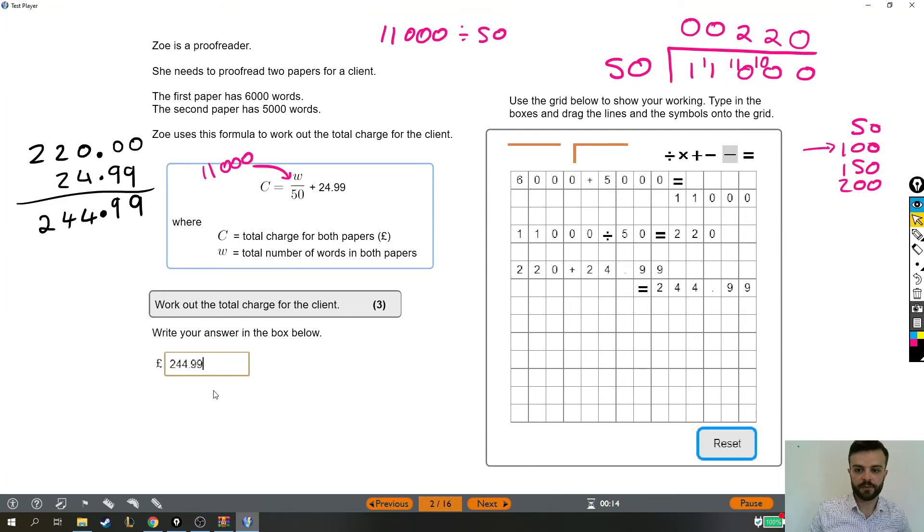So key things to take away from this. Bus stop division. Always fine. Even when you're divided by a two-digit number, you can still do bus stop. So when you're faced with something a bit scary like 11,000 divided by 50, we can still do it the normal way. Also remember that in a formula where you have a line like that and it looks like a fraction, it means divide. That's what the fraction line kind of means. It means this divided by that. That's why we did 11,000 divided by 50 in the first place. But yeah, that's that. I hope that helped. Thank you and on to the next one.